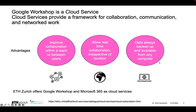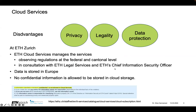Another advantage is that the data is backed up and available from any computer at any time. ETH Zurich offers two cloud services: one is Google Workspace, and one is Microsoft 365. There are disadvantages, however, and those are in the areas of privacy, legality, and data protection. At ETH Zurich, you get the license through the IT shop, but ETH cloud services manages the services. They have to observe regulations at the federal and the cantonal level, in consultation with ETH legal services and the chief information security officer. There are a lot of regulations that must be observed about data protection.